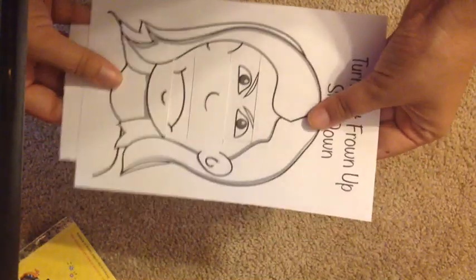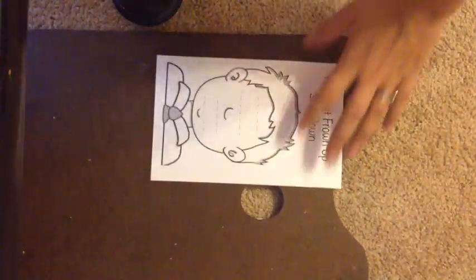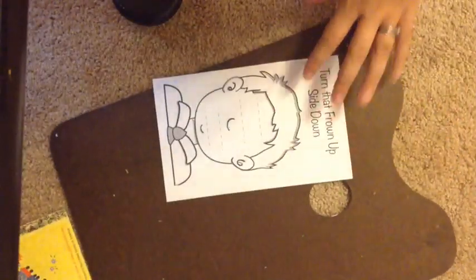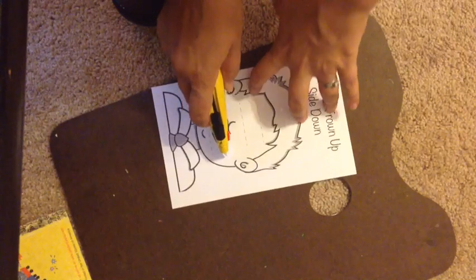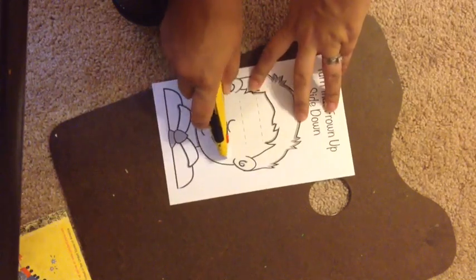Okay, so there's our frowning girl. I'll show you on the boy - you'll want to cut just outside the guides so they don't show.